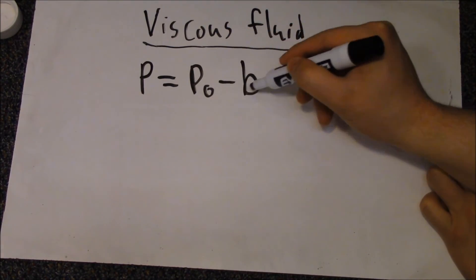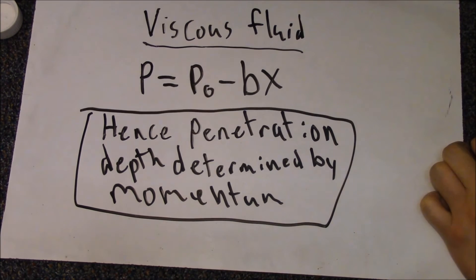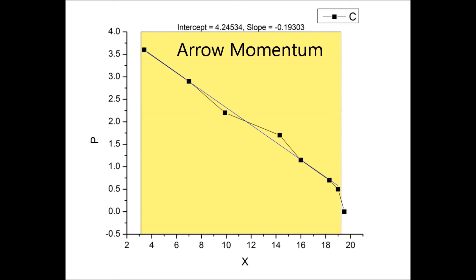Thus, the starting momentum determines the maximum penetration. Does this work for arrows? Yeah, more or less. There's a little weirdness at the end, but the rest works out fine.